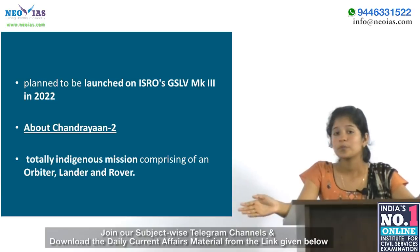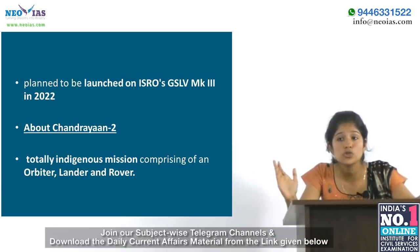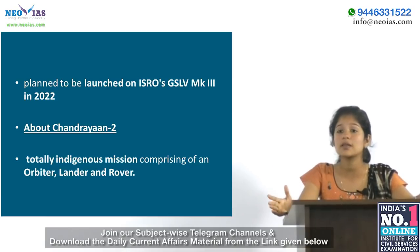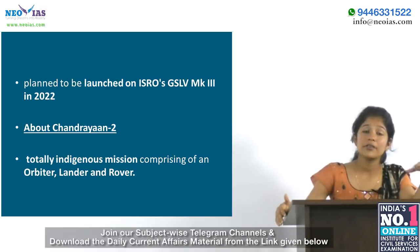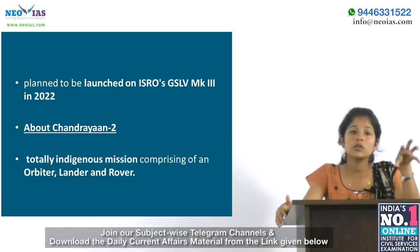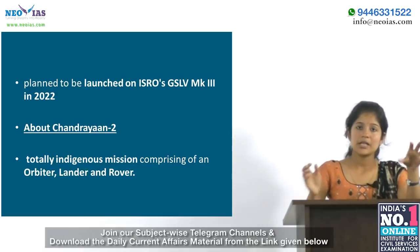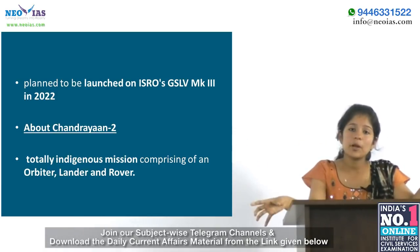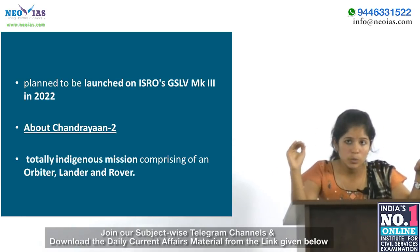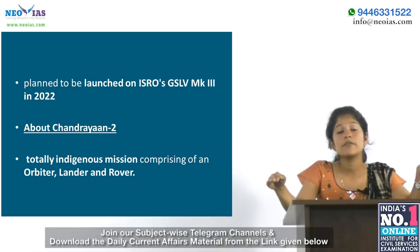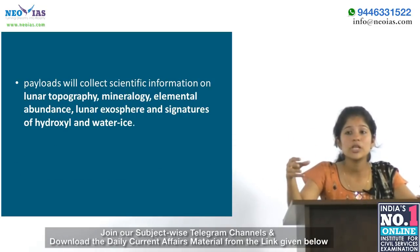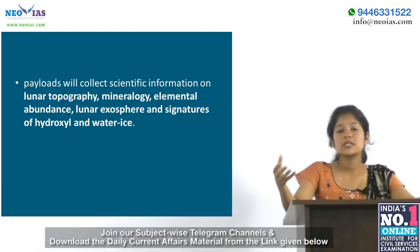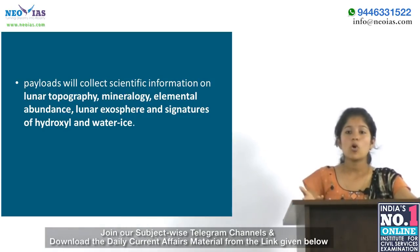Chandrayaan 2 is India's second mission to the moon — a totally indigenous mission comprising an orbiter, lander and rover. After reaching the 100-kilometer lunar orbit, the lander housing the rover will separate from the orbiter. After a controlled descent, the lander will soft-land on the lunar surface at a specified site and deploy the rover. The payloads will collect information about the lunar topography, mineralogy, elemental abundance, lunar exosphere and the presence of water.